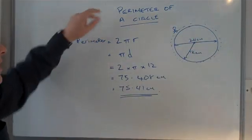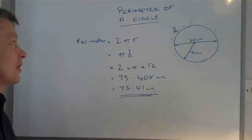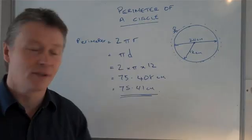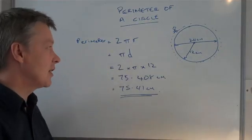Now, some people call it perimeter. The proper name for it is circumference. It's the circumference of the circle, but nevertheless, perimeter is absolutely fine. Now, there's two formulas that both will give you exactly the same answer.